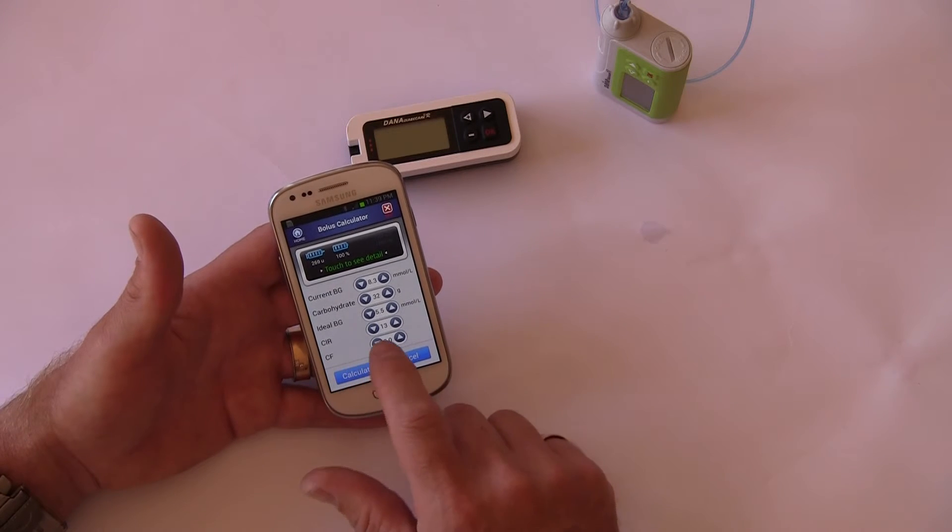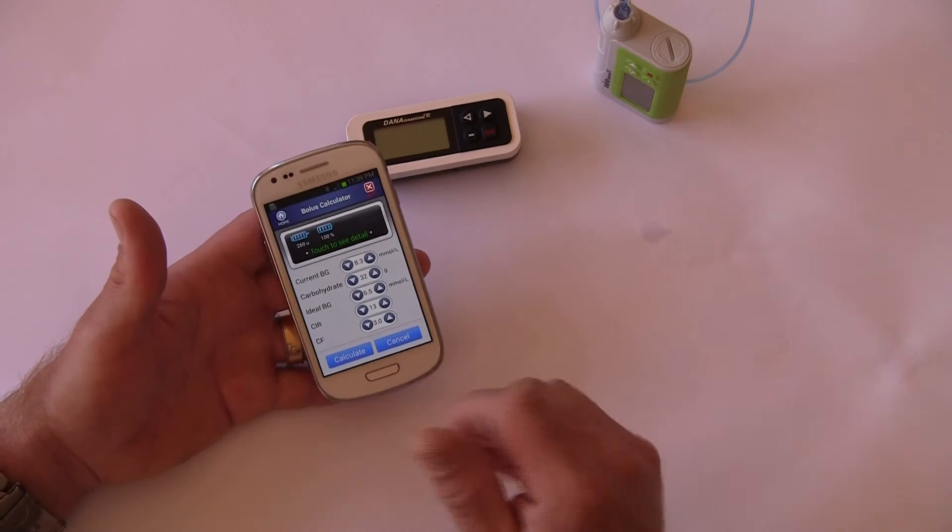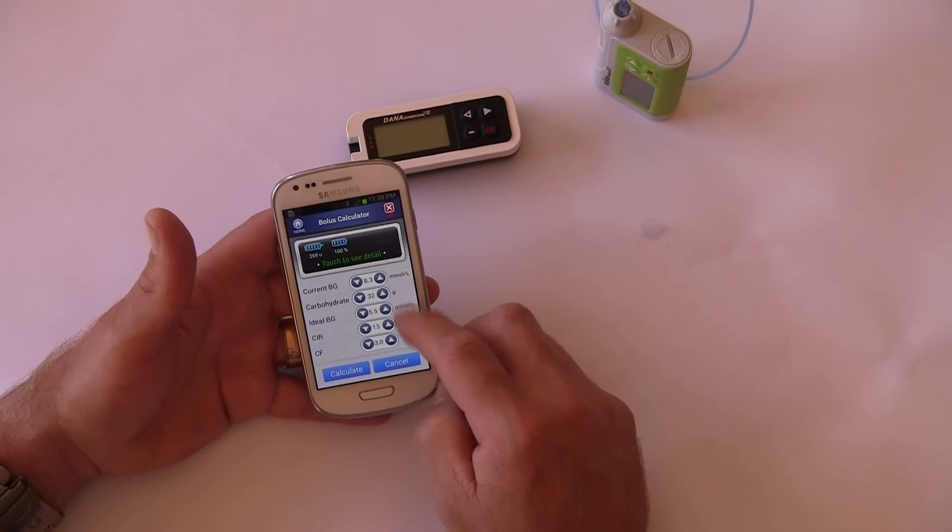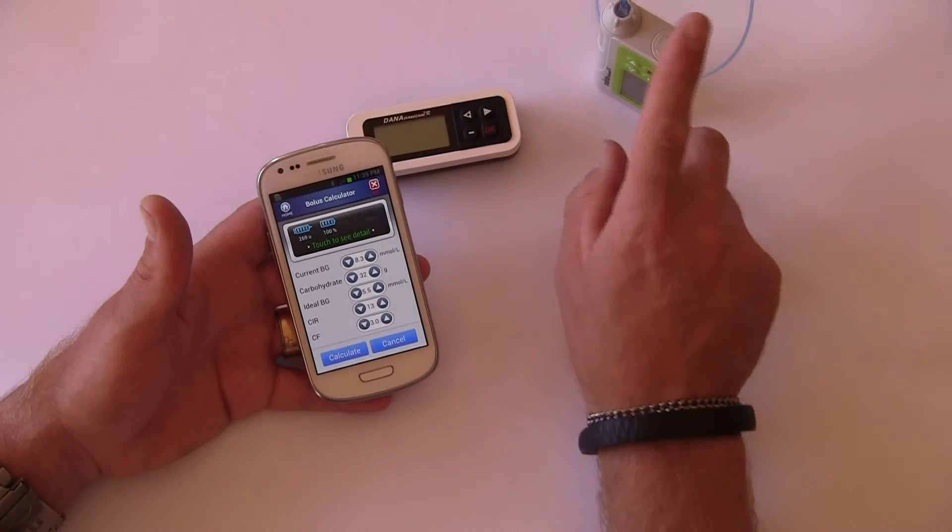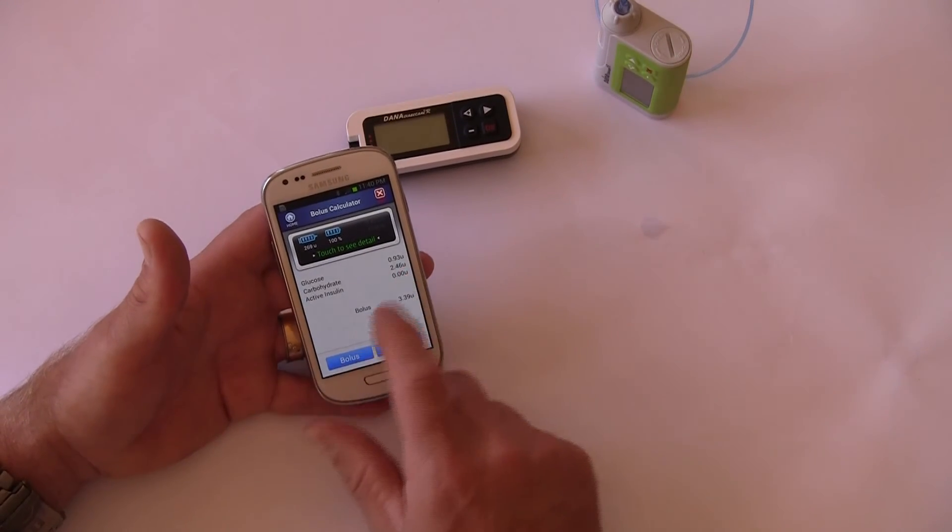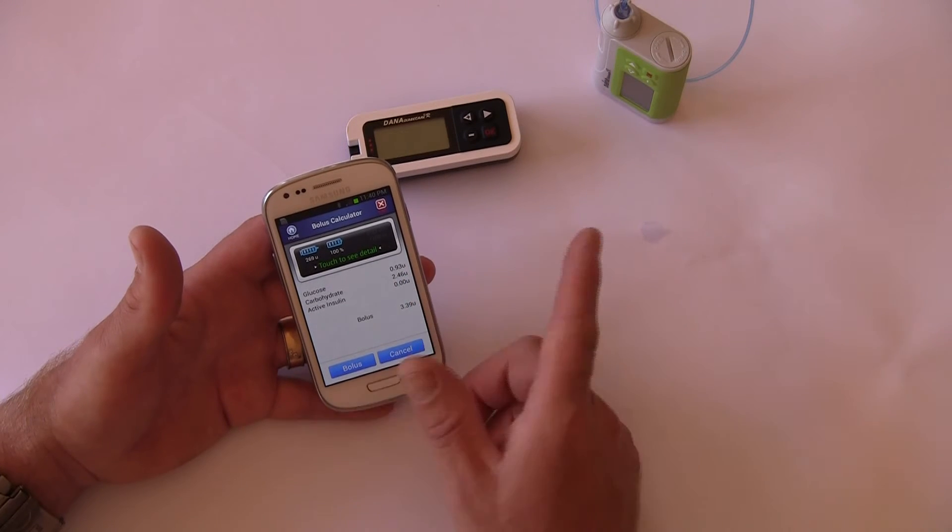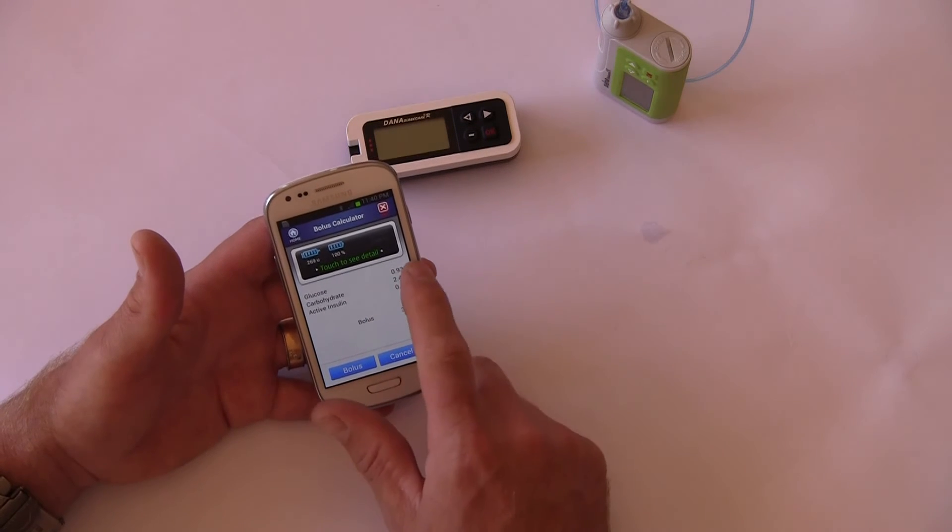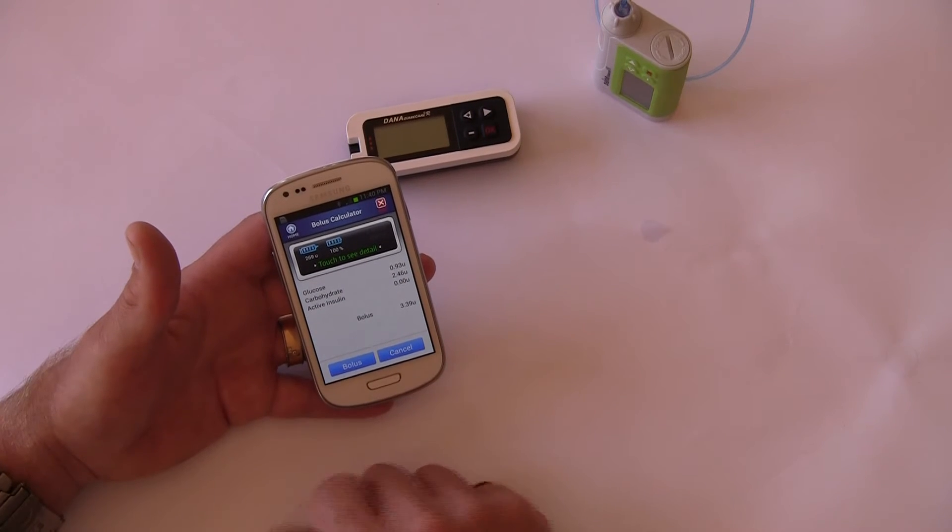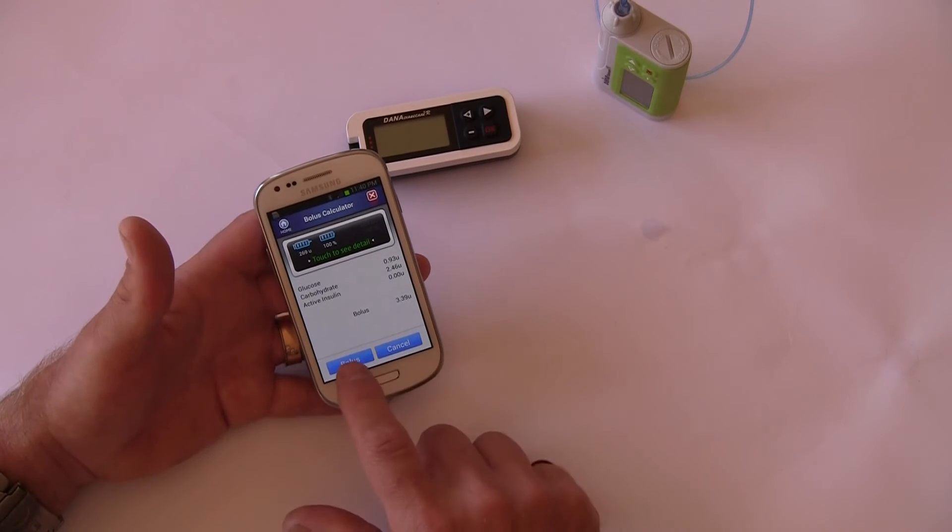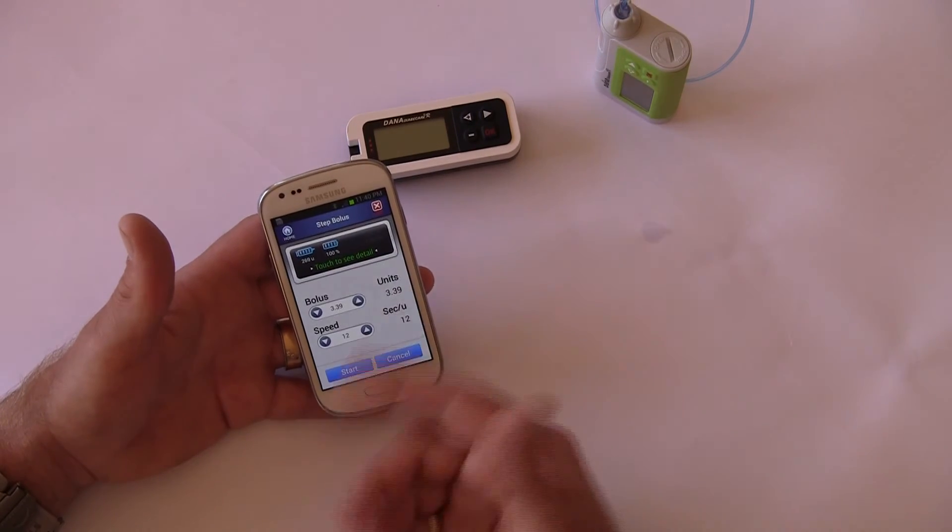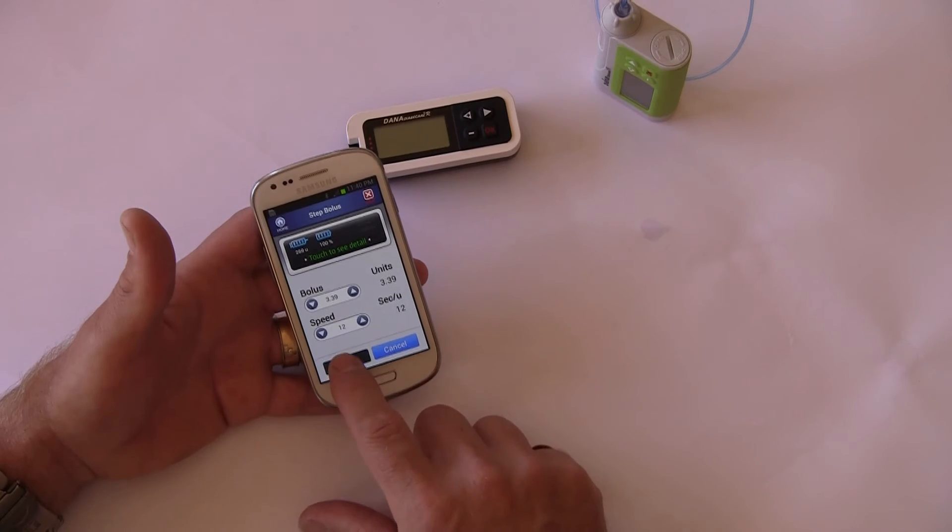We can now just go calculate. It comes up and says that to change my BG from 8.3 down to 5.5, I need 0.93 of a unit. My carbohydrate requires 2.46 units. I have zero active insulin currently working, so the bolus suggested is 3.39 units. I can either increase, decrease, or change that, or I can just say bolus. I want it all at once as a standard bolus, so I go start. Start bolus, yes.